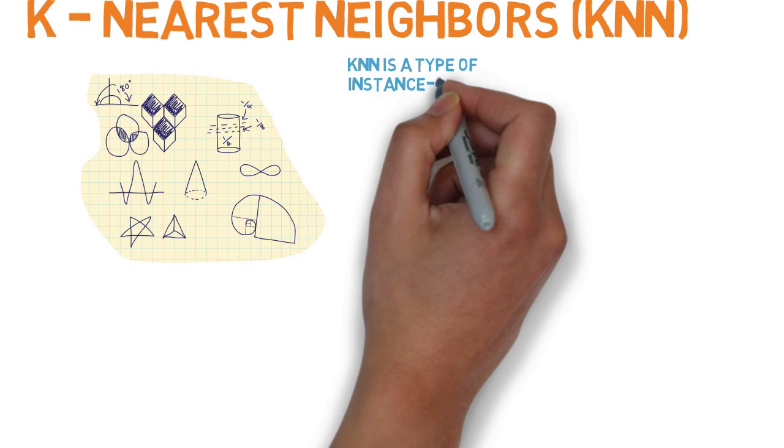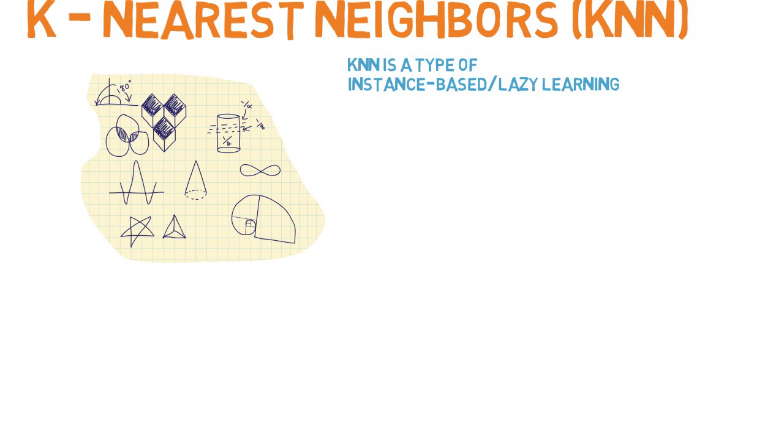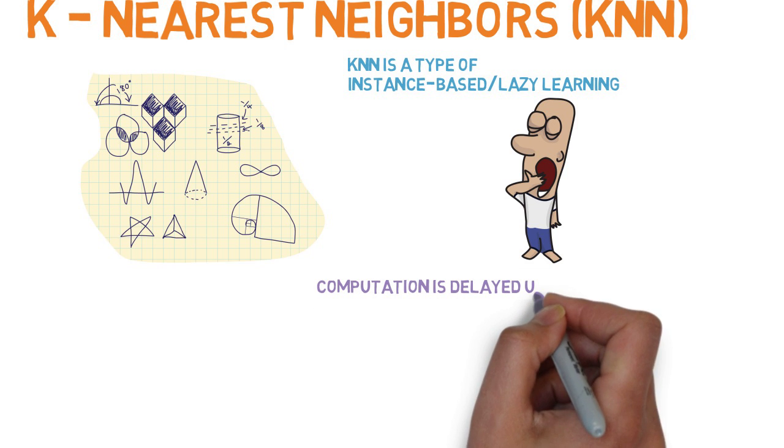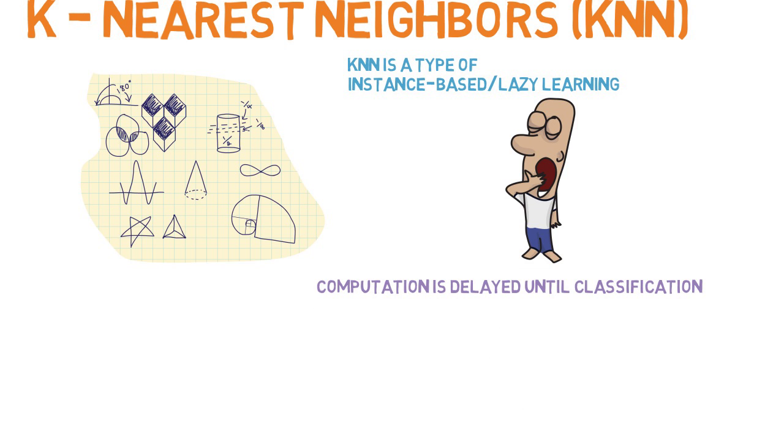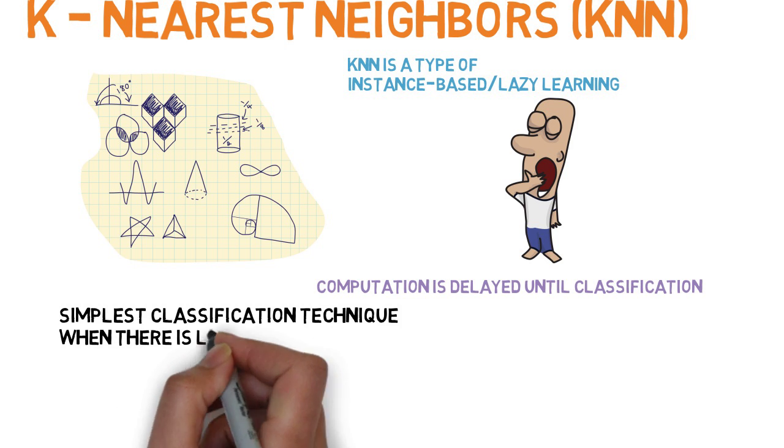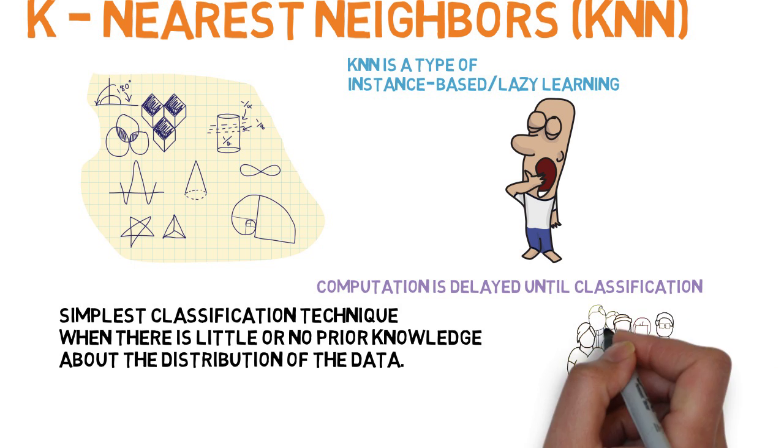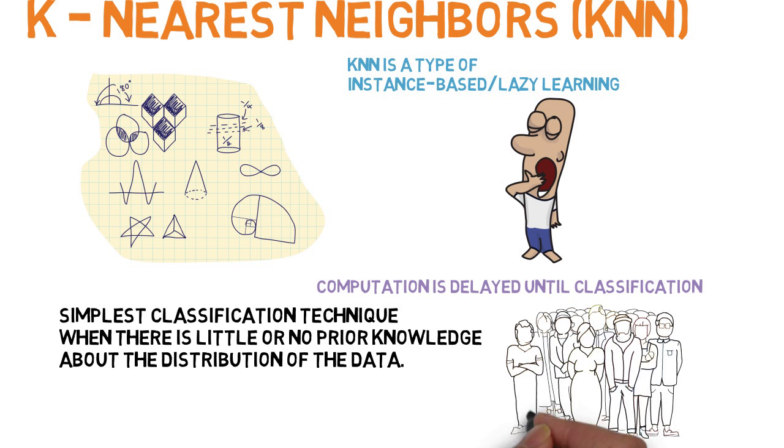KNN is a type of instance-based learning or lazy learning where the function is only approximated locally and all competition is delayed until classification. The KNN algorithm is fundamental and one of the simplest classification techniques when there is little or no prior knowledge about the distribution of the data.